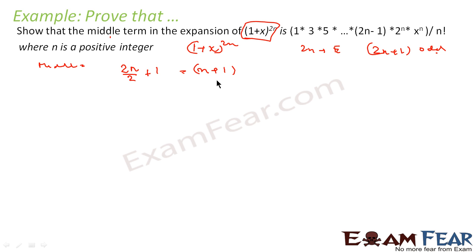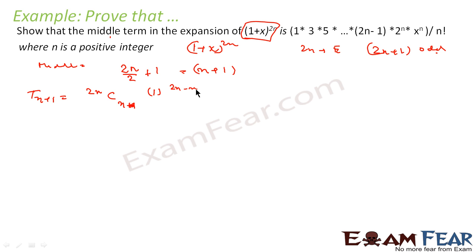Now we know that n + 1 is the middle term position. So T(n+1) is given by 2n C n — because the total number of terms is 2n, and using tr+1 = nCr — multiplied by 1^(2n−n) into x^n. This simplifies to 2nCn · x^n.